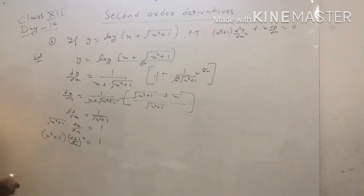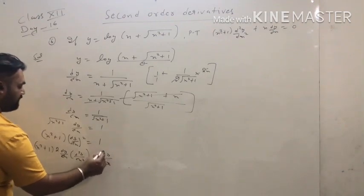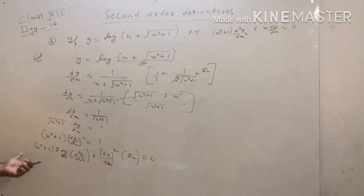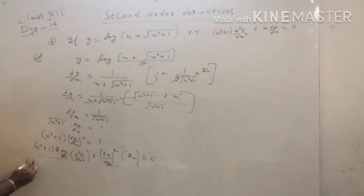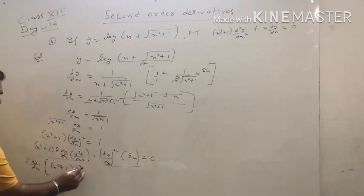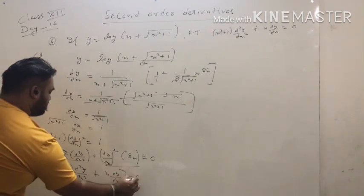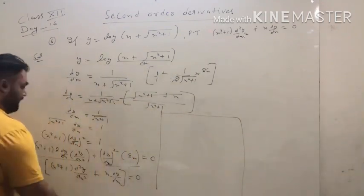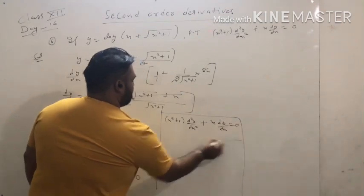Now again by using the product rule, we find the derivative of (x² + 1)·(dy/dx)². Product rule: first term same times derivative of second gives (x² + 1)·2(dy/dx)·(d²y/dx²); second term same times derivative of first gives (dy/dx)²·2x = 0 (right side). Taking 2(dy/dx) as common: 2(dy/dx)·[(x² + 1)·(d²y/dx²) + x·(dy/dx)] = 0. Dividing by 2(dy/dx): (x² + 1)·(d²y/dx²) + x·(dy/dx) = 0.